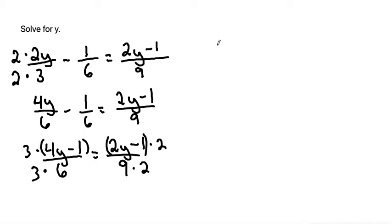Distributing my 3 in, I get 12y minus 3 times 1 is 3 over 18 is equal to, then distribute the 2 in, 4y minus 2 over 18.